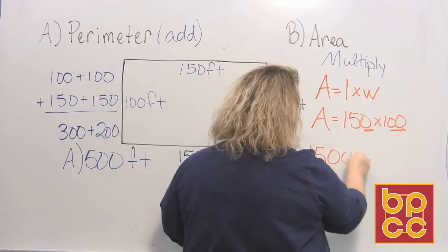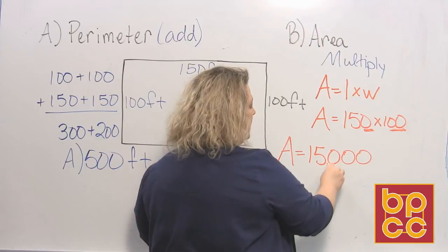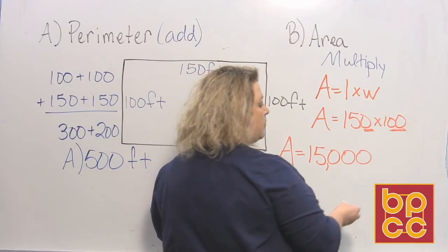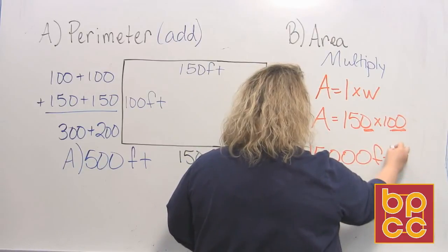three zeros to the end of 15. And that makes 15,000. And area is measured in square units, so that is square feet.